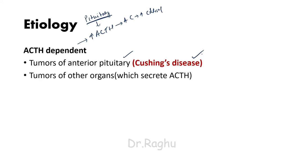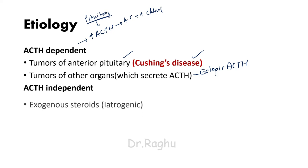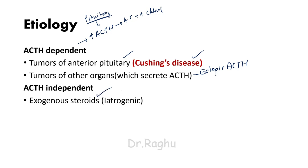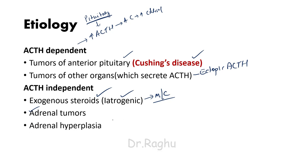Sometimes Cushing's syndrome can also occur due to tumors of other organs that secrete ACTH — this is called ectopic ACTH production. One of the most common sources is lung cancers, which can produce ACTH and cause Cushing's syndrome. The ACTH-independent cause includes administration of exogenous steroids; long-term steroid therapy is called the iatrogenic cause and is the most common cause of Cushing's syndrome. It can also result from tumors or hyperplasia of the adrenal gland.